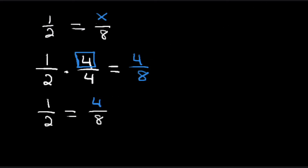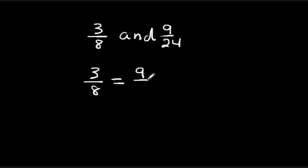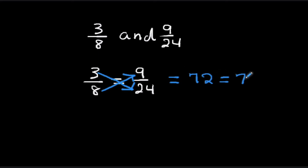Let's go over some more examples. Let's say you have three eighths and nine over twenty-four, and you need to use cross multiplication to test whether they are proportional. So we have three eighths equals nine over twenty-four. Three times twenty-four equals seventy-two, and eight times nine equals seventy-two. Therefore, three eighths and nine twenty-fourths are proportional.